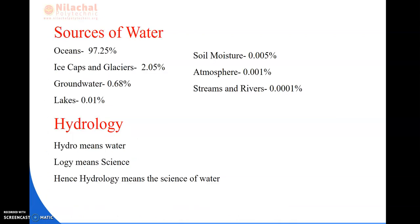So first, what are the sources of water? As all of us know: oceans, ice caps, glaciers, lakes, soil moisture, atmosphere, streams and rivers — they are the sources of water. Oceans take 97.25%, ice caps and glaciers 2.05%, groundwater 0.68%, lakes 0.01%, soil moisture 0.005%, atmosphere 0.001%, and streams and rivers 0.0001%. Adding these gives us 100% of the sources of water.